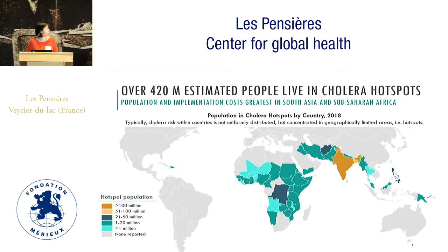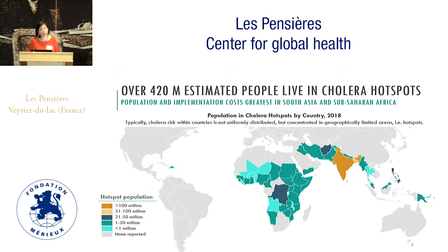In orange you can see India and Bangladesh, which drive about 50% of the total population in hotspots. The African continent accounts for 25%, and then the last 15% is driven by the rest of the world.